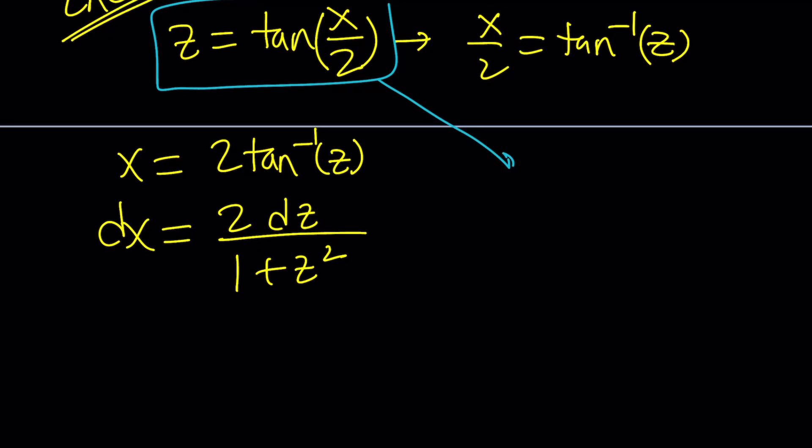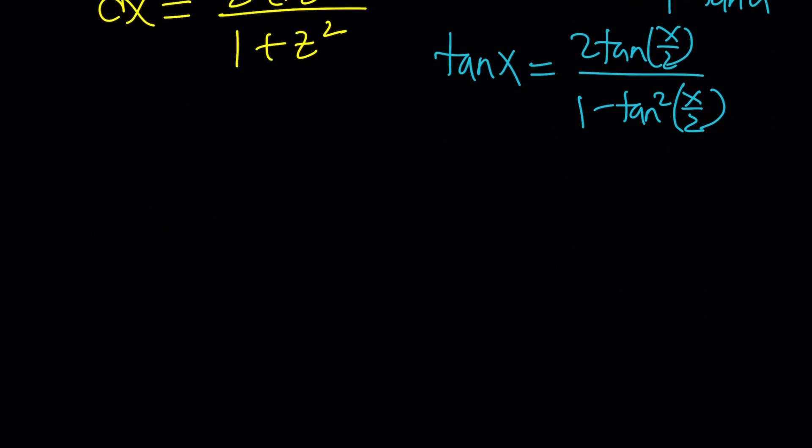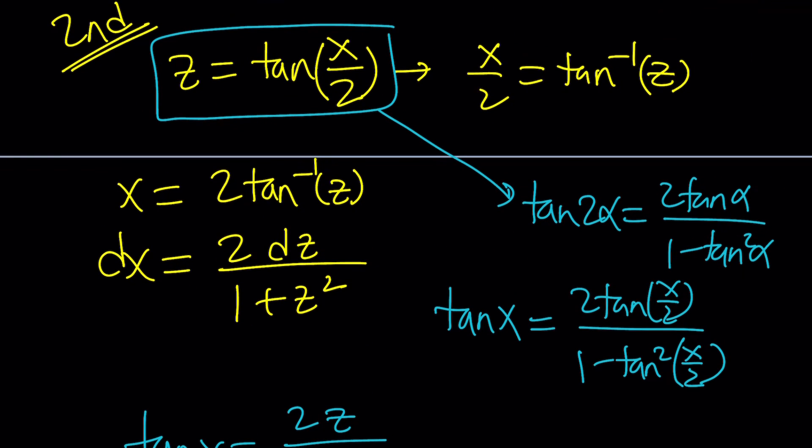Remember, tangent 2 alpha is 2 tan alpha divided by 1 minus tan squared alpha. So now tangent x, which happens to be 2 times x over 2, can be written as 2 tangent x over 2 divided by 1 minus tangent squared x over 2. In this case, alpha is x over 2. And we do know that tangent x over 2 is z. So from here, tangent x is going to be 2z over 1 minus z squared. Tangent x over 2 was replaced with z. So that's going to be helpful.